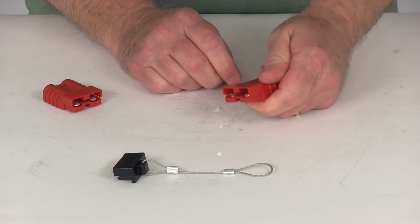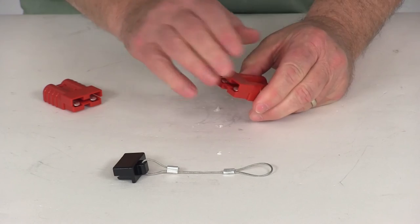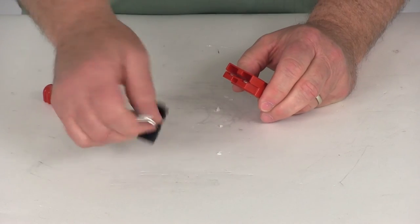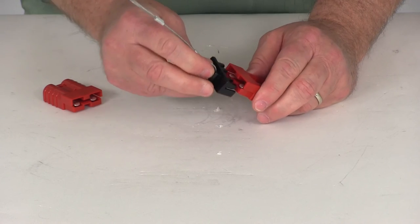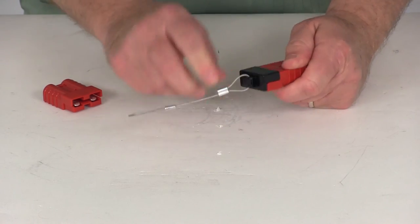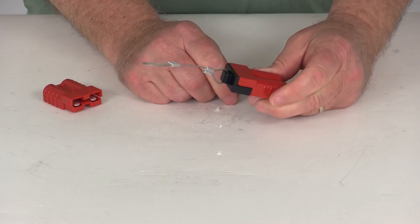And then with this one connected to your power supply on your vehicle, when your winch isn't connected, just take your dust cover, line it up, push it on, and then it will totally cover the terminals and keep it from the elements.